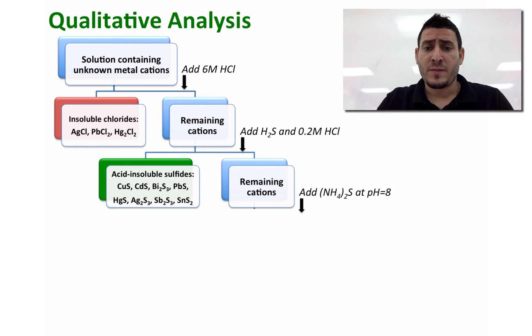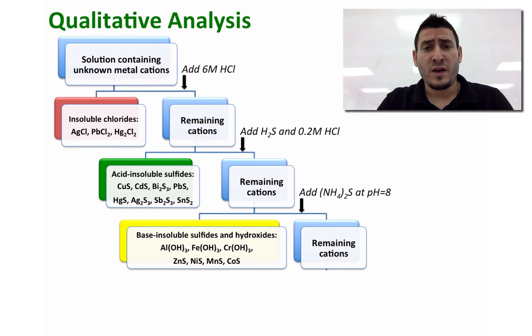In the third stage, I can add ammonium sulfide at a pH equal to 8, and here I can separate ions like aluminum, iron 3, chromium 3, zinc, nickel, manganese, and cobalt, and the remaining ions will remain in solution.